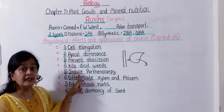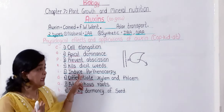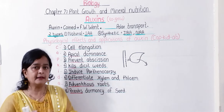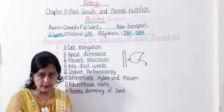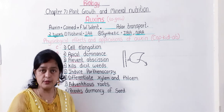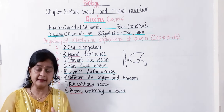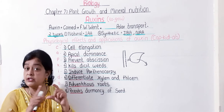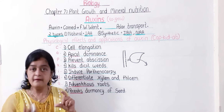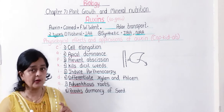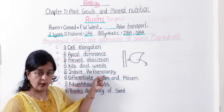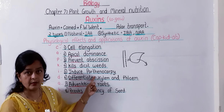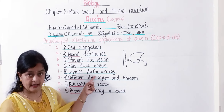The fifth function is that auxin induces parthenocarpy. Parthenocarpy is the process in which parthenocarpic fruits are developed. Parthenocarpic fruits are fruits which do not have seeds. Auxin plays an important role in the development of these seedless parthenocarpic fruits.